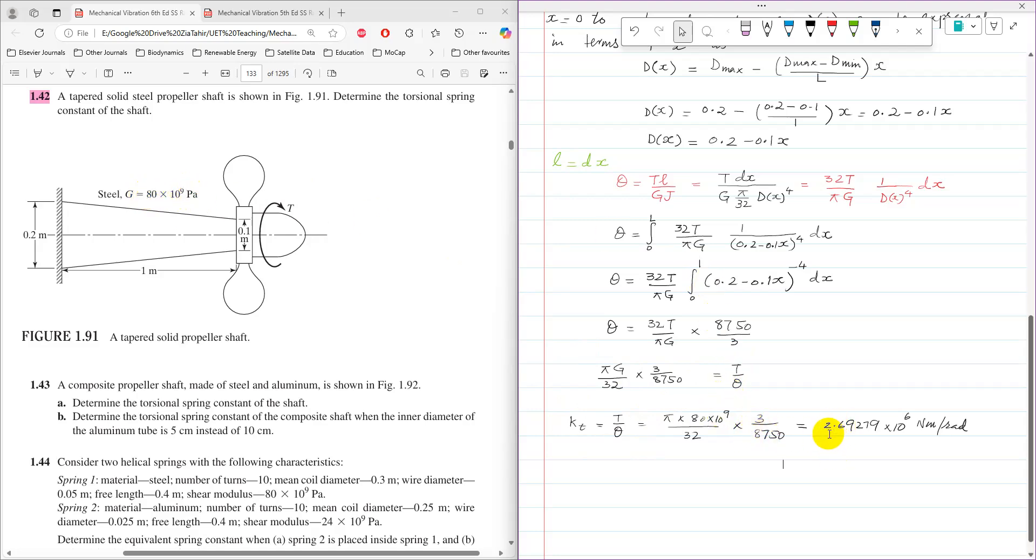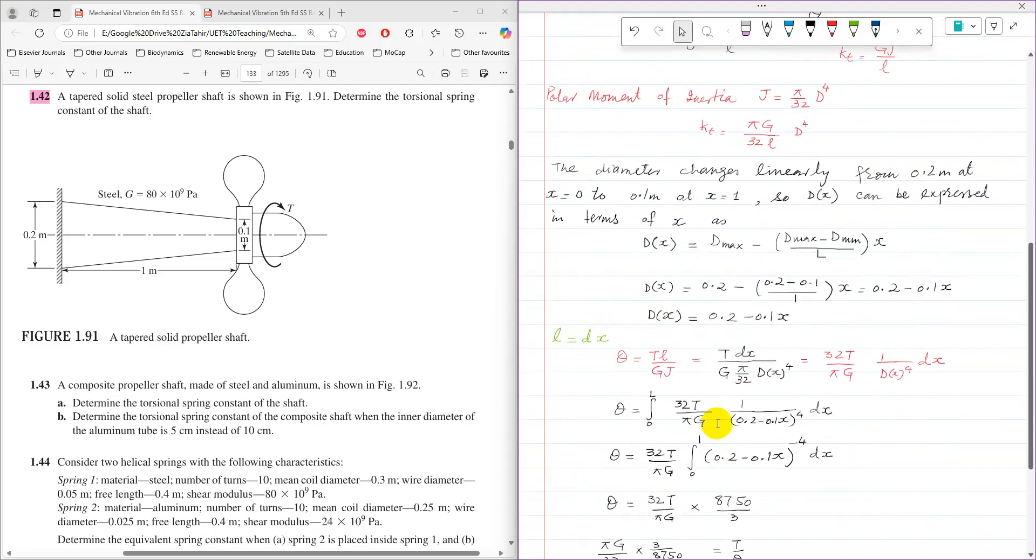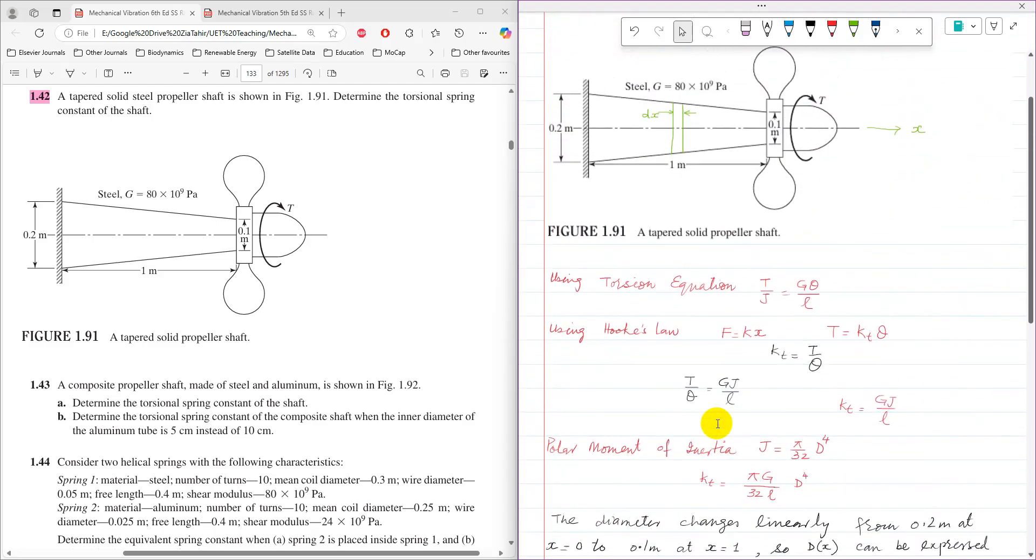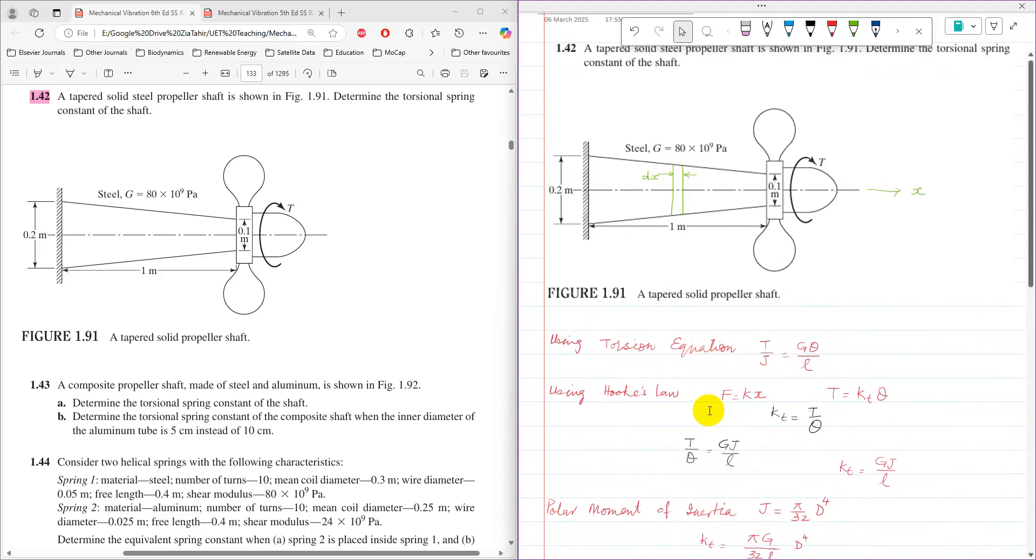The value of KT comes as 2.69 times 10 to the power 6 newton meter per radian, so that is equivalent torsional spring constant of tapered shaft. I hope you find this explanation helpful, so thank you very much for watching.